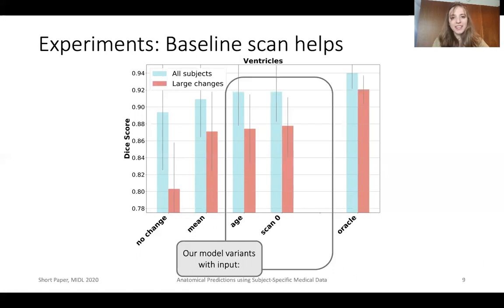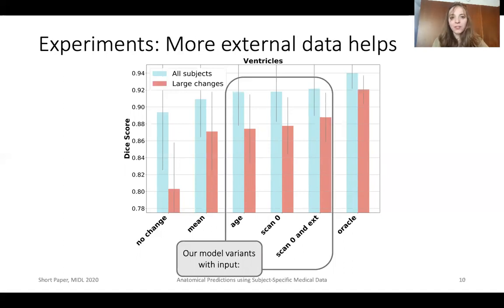When given the baseline scan, the model performs even better. Finally, the last variant has access to all the subject information, meaning that it uses the baseline scan and all the available attributes. This variant performs better than the two previous ones.